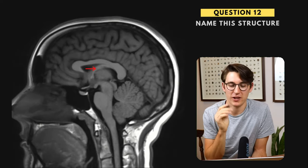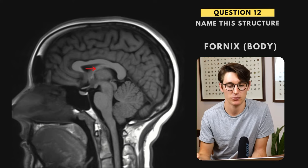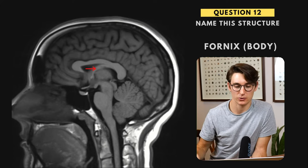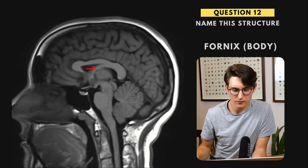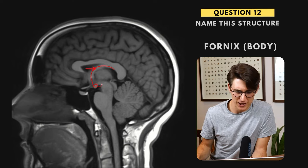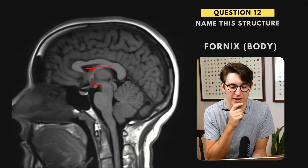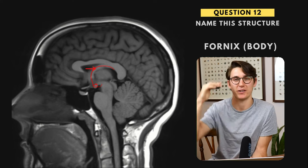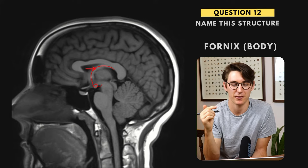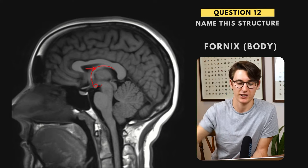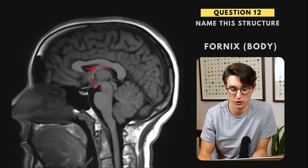Question twelve — again at the midline. This is the fornix, more specifically the body of the fornix. We are inferior to our corpus callosum. From the hippocampus, the fornix runs superiorly and anteriorly, then down inferiorly towards the mammillary bodies, and then runs up into the anterior nuclei of the thalamus. People often forget about the fornix — we know our corpus callosum and basal ganglia, but we forget about this fornix running down towards our mammillary bodies. It's a good one to remember.